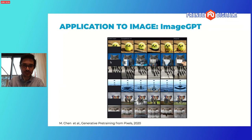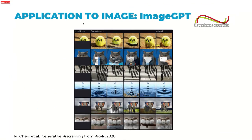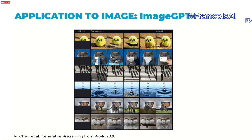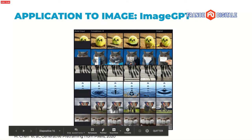Here are some predictions from ImageGPT. We give the model part of an image and it has to imagine the rest. The cat example is particularly interesting — there is a tiny piece of white, and the model imagines what it is. The birds are also quite impressive; you can even see the reflection of the birds in the water.